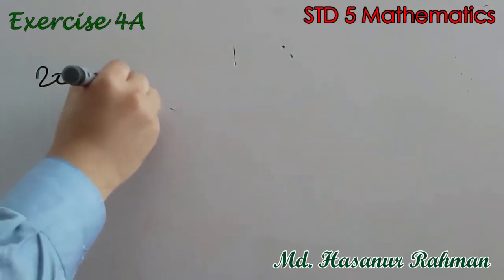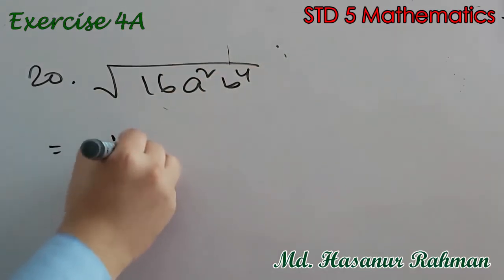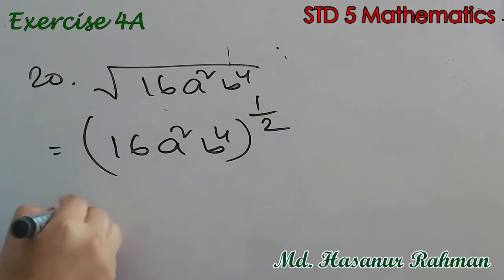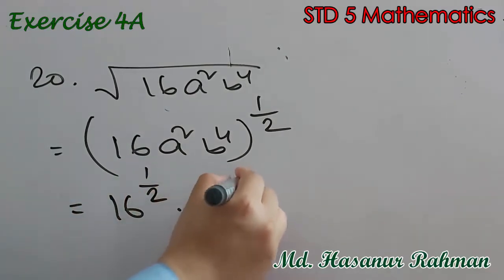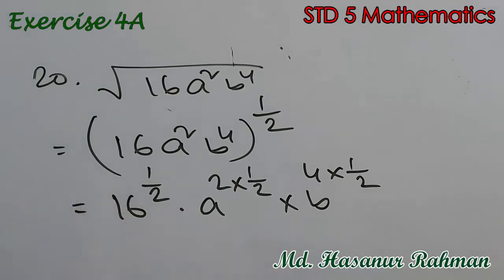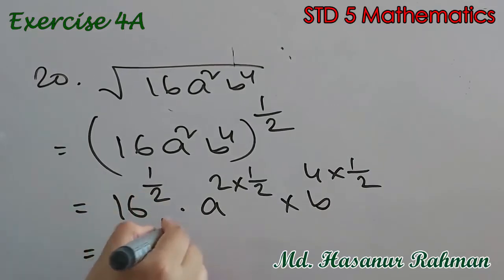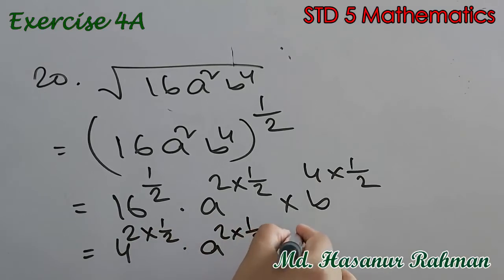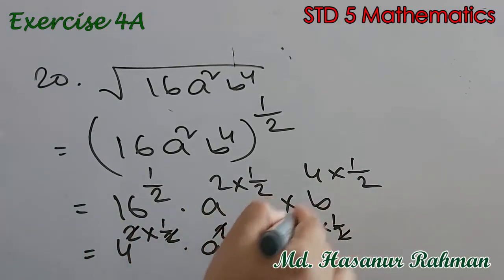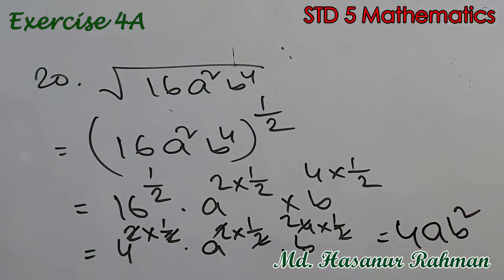Number 20: root over 16a squared b to the power 4. Square root means raising to the power half: 16 to the power half into a squared to the power half into b to the power 4 into half. Since 16 is 4 squared, we get 4 to the power 2 into half, a to the power 2 into half, b to the power 4 into half. After simplifying, the answer is 4ab squared.